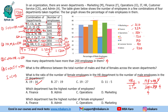Which department has the highest number of employees? Operations. For the highest number of female employees: HR has 60% female out of 190, giving 114 females. Admin has 40% female out of 230, giving 92. Operations has only 30% female. HR has the highest number of female employees - 114. If HR is not in the options then the answer given would be incorrect; the correct answer is HR.